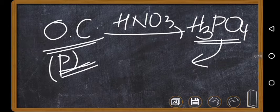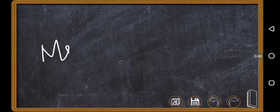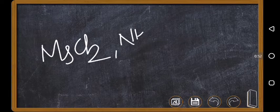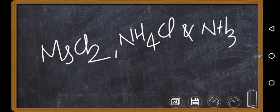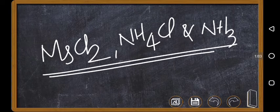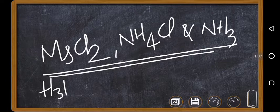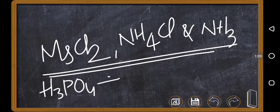The H₃PO₄ is then treated with magnesium mixture. Magnesium mixture is a combination of MgCl₂, NH₄Cl (ammonium chloride), and a little amount of ammonia. When this magnesium mixture is treated with H₃PO₄, the H₃PO₄ is converted to magnesium ammonium phosphate.